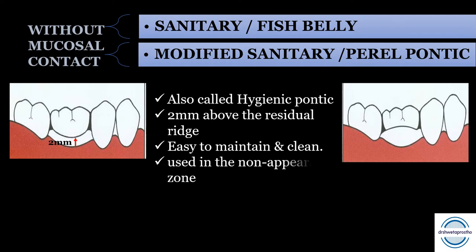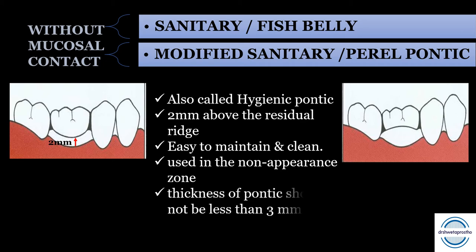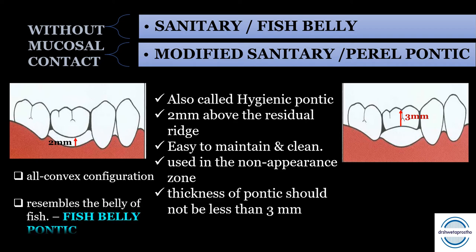Because of the gap from the ridge, hygienic pontics are unesthetic and are used in the non-appearance zone, for example the mandibular molars. The occlusal-gingival thickness of the pontic should not be less than 3 mm for maintaining strength. The sanitary pontic specifically has an all-convex configuration both faciolingually and mesiodistally, resembling the belly of a fish — hence the name fish-belly pontic.